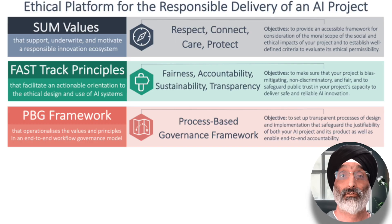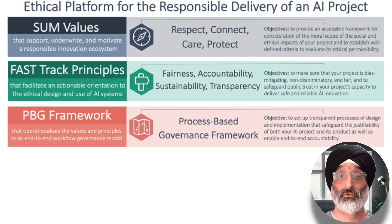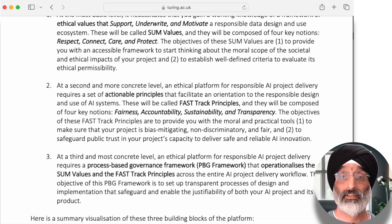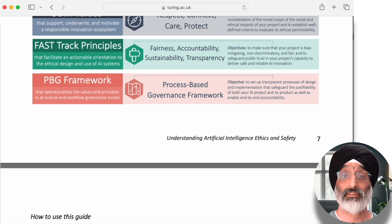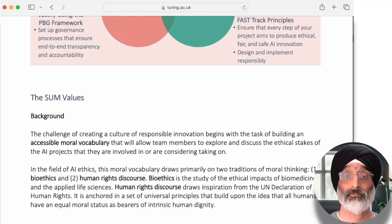Professor Leslie suggests there are three important building blocks for the responsible delivery of an AI project. These building blocks allow for the creation of an ethical foundation for responsible AI projects and go beyond just cultural considerations. He argues it's about equipping your team with the tools necessary to ensure ethical permissibility, fairness, trustworthiness and justifiability of your project. By focusing on these components, teams can establish a solid framework for ethical AI development and deployment, fostering transparency and accountability throughout the process.